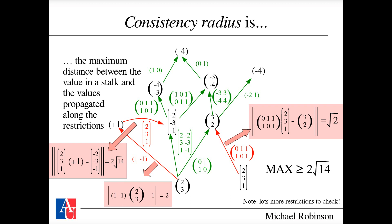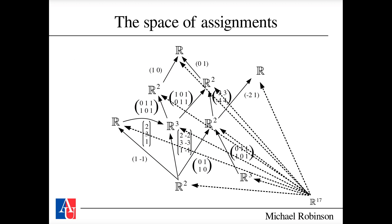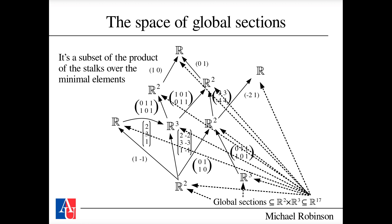You don't have to iterate over all possible combinations because the diagram commutes. The consistency radius tells you how far a particular data assignment is from what the assumed structure encoded in the sheaf expects. The space of assignments in this example requires 17 real numbers — think of it as R¹⁷ with each component a projection. The space of global sections is a subset, in this case isomorphic to R² × R³, requiring only five real numbers.